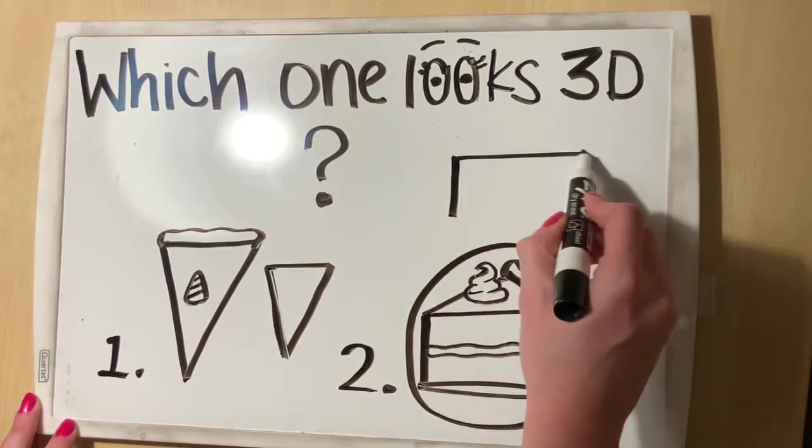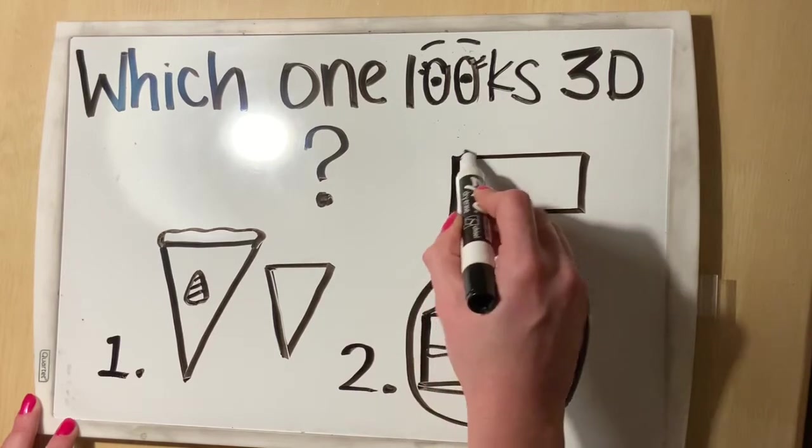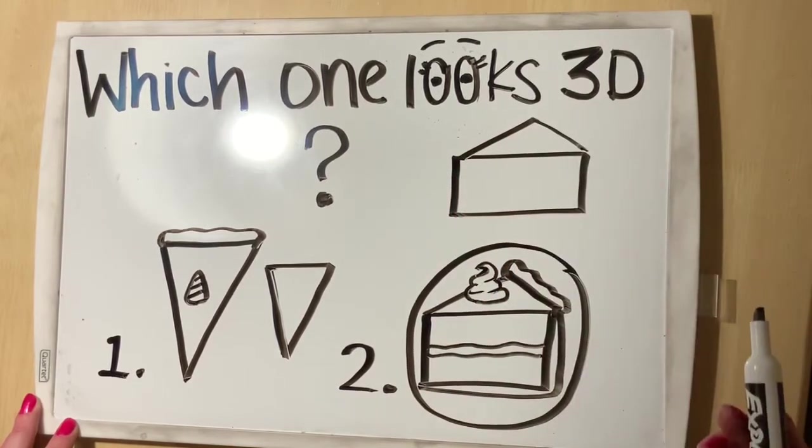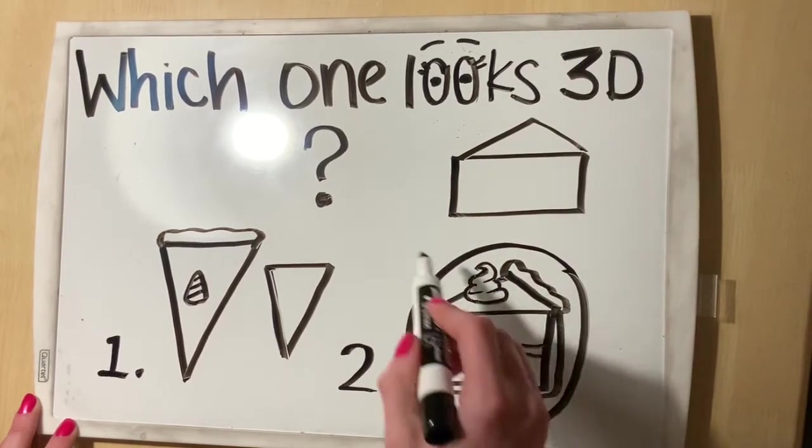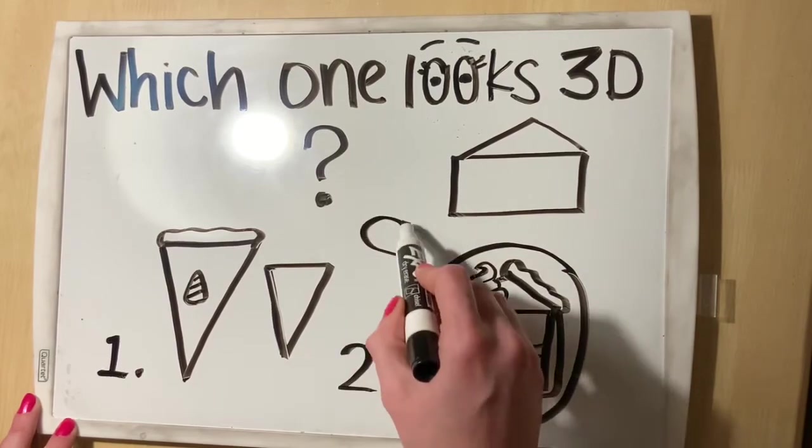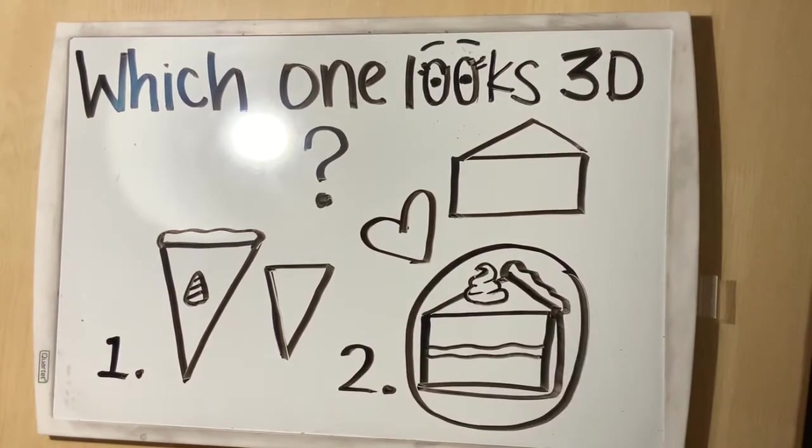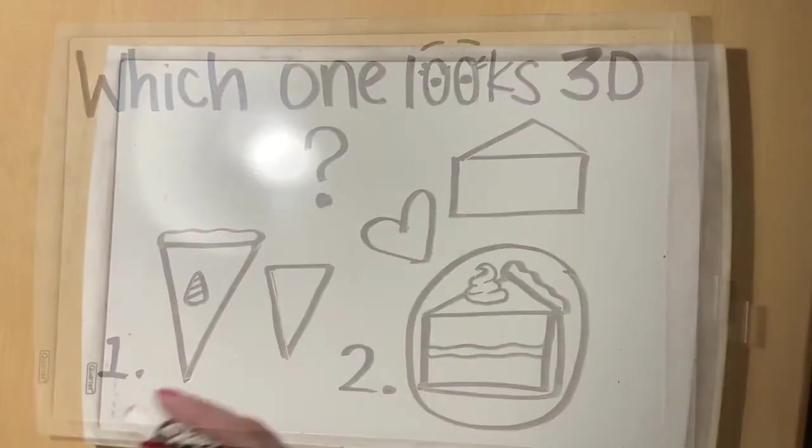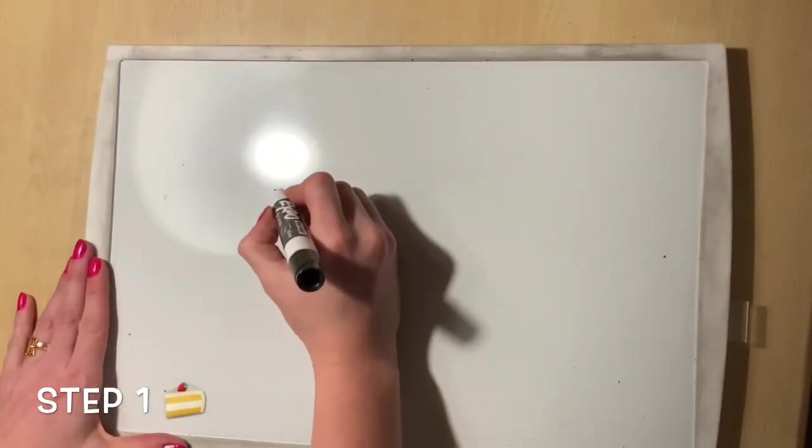With number two, there is a rectangle with a triangle on top and that makes it look like a triangular prism, which is a form. That is the form of a pie or a piece of cake.